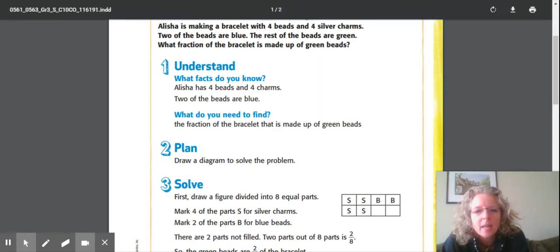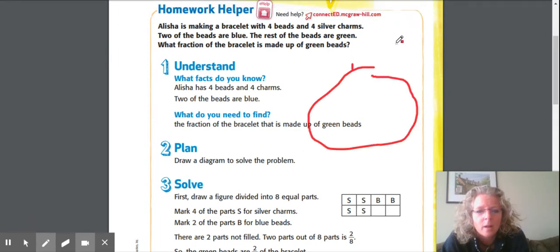So let's go ahead and take a peek at what we have at the top. Alicia is making a bracelet with four beads and four silver charms. Now the way I do things like this, I'm gonna go ahead and make my bracelet. You put one, two, three, four things on it, then one, two, three, four.